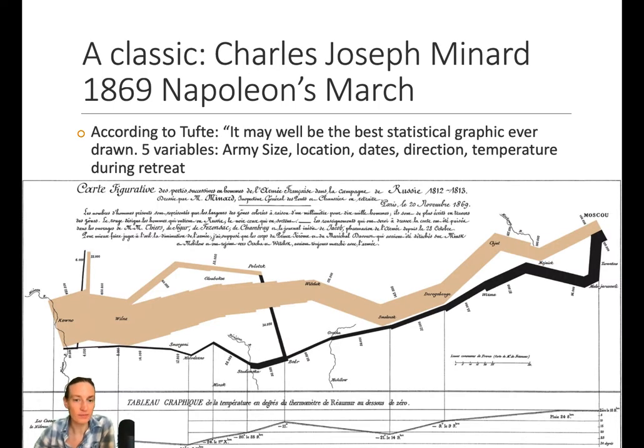Let's have a look at some classic charts. So here is Napoleon's 1869 march, which has been referred to as the best statistical graphic ever drawn. I'm not sure if that's really still the case. However, it has five variables on there. It starts here in Kaunas and it goes all the way to Moscow. It has the army size.